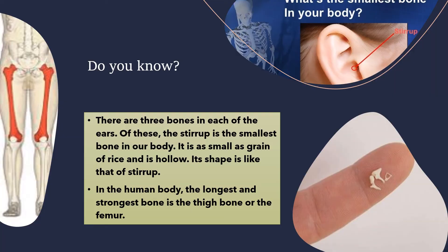There are three bones in each of the ears. The stirrup is the smallest bone in our body — it is as small as a grain of rice and it is hollow. In the human body, the longest and strongest bone is in the thigh, called the femur.